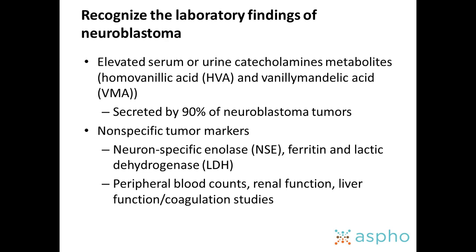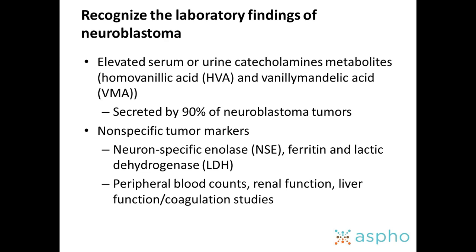Recognize the laboratory findings of neuroblastoma. Children will often have elevation of serum or urine catecholamines — in particular homovanillic acid (HVA) or vanillylmandelic acid (VMA) — occurring in 90% of children with neuroblastoma. Other nonspecific tumor markers no longer routinely used for diagnostic purposes include elevation of neuron-specific enolase, ferritin, or LDH. If the tumor significantly involves the bone marrow, these children can sometimes have pancytopenia.